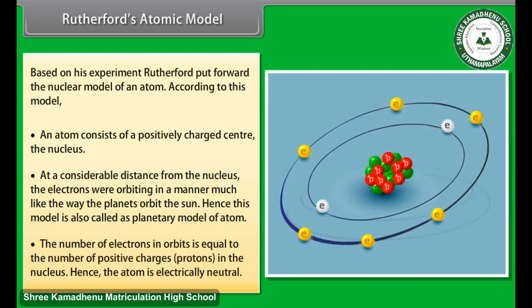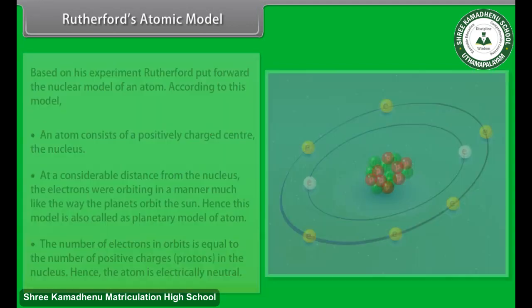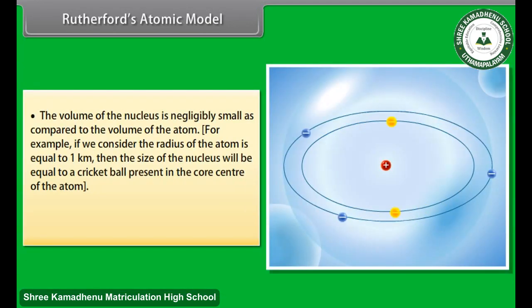The number of electrons in orbits is equal to the number of positive charges, protons, in the nucleus. Hence, the atom is electrically neutral. The volume of the nucleus is negligibly small as compared to the volume of the atom. For example, if we consider the radius of the atom is equal to 1 km, then the size of the nucleus will be equal to a cricket ball present in the core center of the atom. Hence, most of the space in the atom is empty.